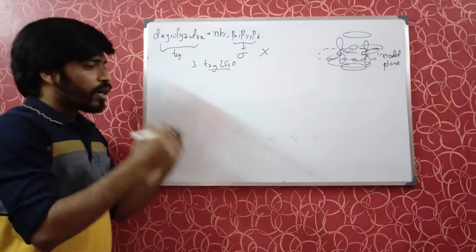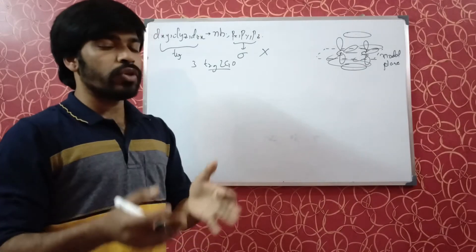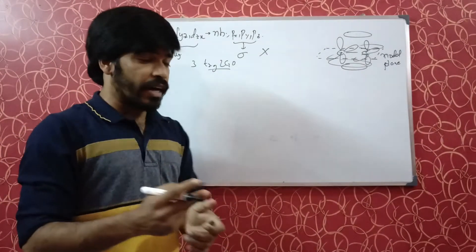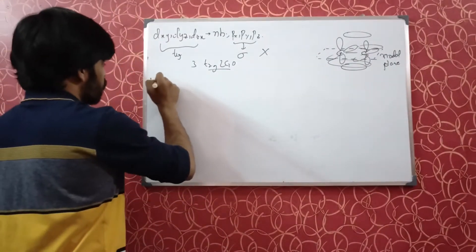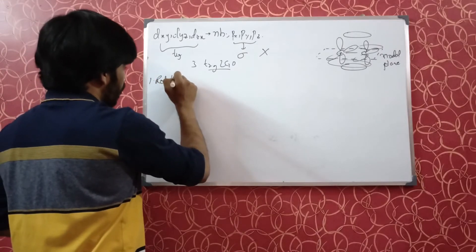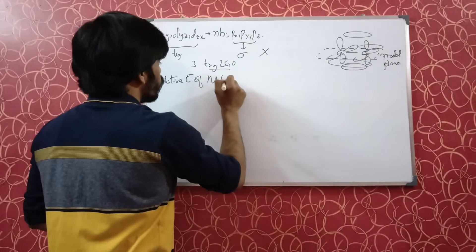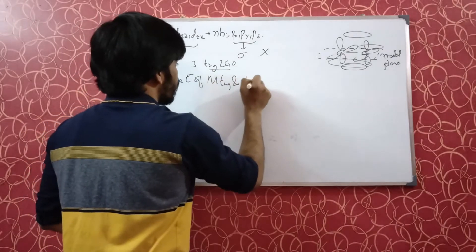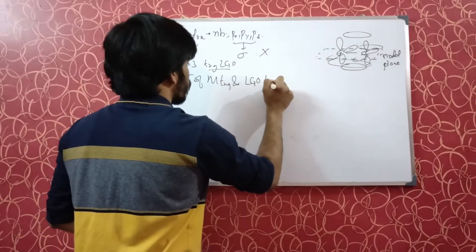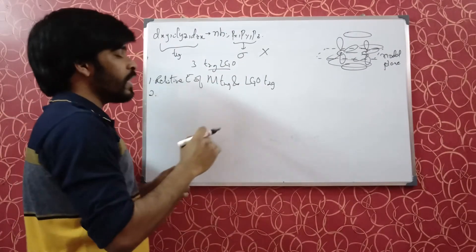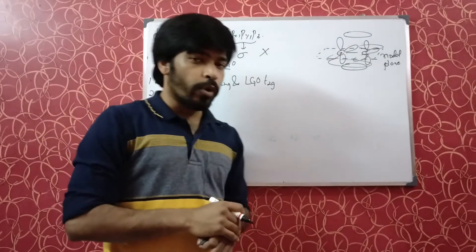Now, what is the strength of the pi bonding? How good the interaction is going to be? That depends on two factors. First is the relative energies of metal t2g and ligand group orbital t2g orbitals. What is the difference in the energy of the metal and the ligand group orbitals?